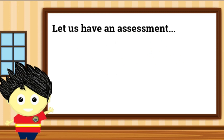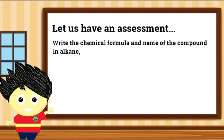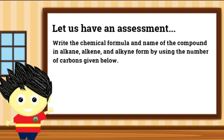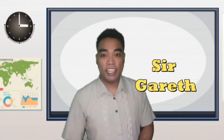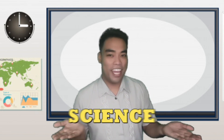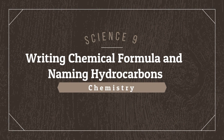Ngayon, subukin natin ang iyong natutunan sa pamamagitan ng pagsasanay na ito. Ibibigay ko lamang ang bilang ng carbons na nasa isang compound at subukan mong alamin ang chemical formula at pangalan nito in alkane, alkene, at alkyne form. Subukan nating kunin ang chemical formula at pangalan ng compound na may 8 carbons. Isusulat mo ang alkane, alkene, at alkyne form na chemical formula nito at ang pangalan. Bibigyan lamang kita ng 20 segundo upang sagutan ang bahaging ito. Maaari mong i-pause ang video lecture na ito upang mas maayos mong masagutan ang pagsasanay na ito. Again, I am Sir Garrett and let us learn and explore the majestic and interesting world of science. Thanks. We'll see you next time.